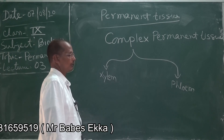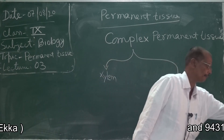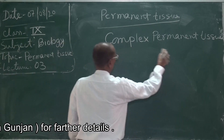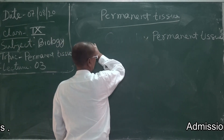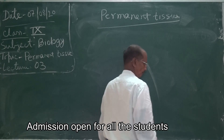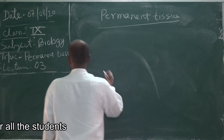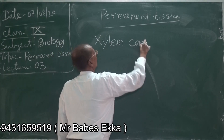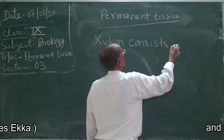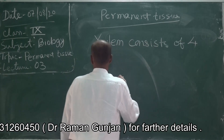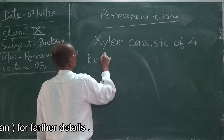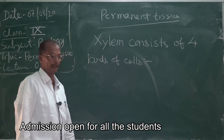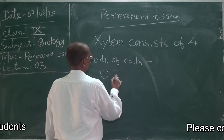Now I am discussing about xylem. Xylem consists of four kinds of cells. The first one is tracheids.